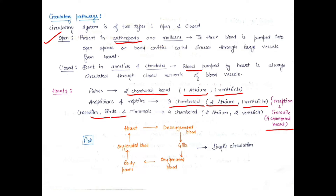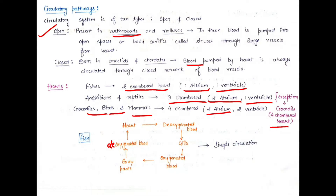Three-chambered hearts are present in amphibians and most reptiles. Four-chambered hearts are present in crocodiles, turtles, birds, mammals, and some other advanced chordates. In fish, the type of circulation is single circulation.